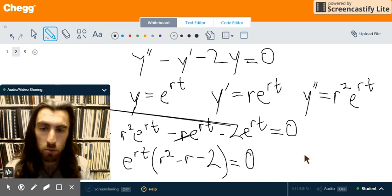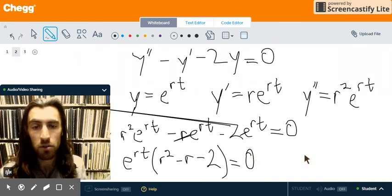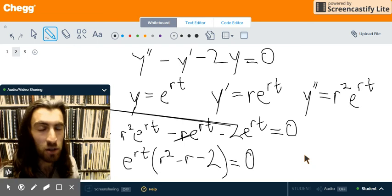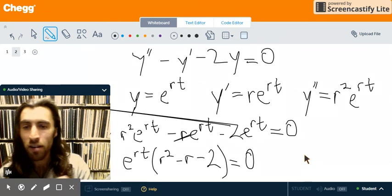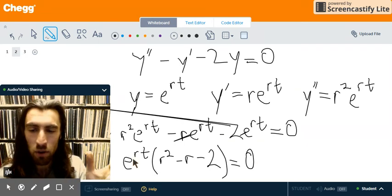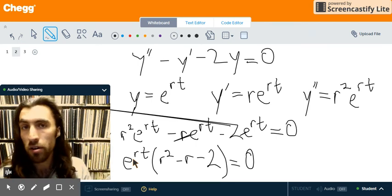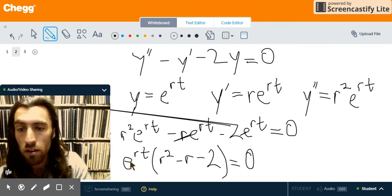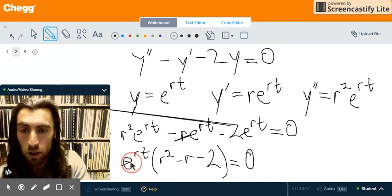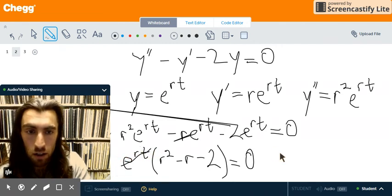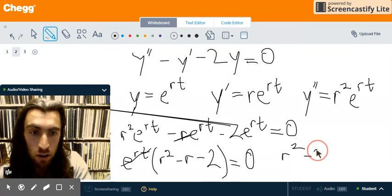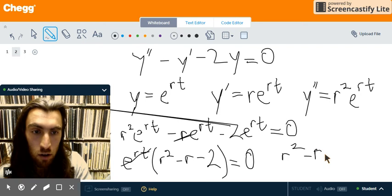So, what we have here is a product of two things that equals 0. That means one of them has to equal 0. If you graph e to the rt, r can do whatever you want. You'll see that e to the rt can never equal 0 for any value of t. So we can cancel this out. And we can conclude that r squared minus r minus 2 equals 0.